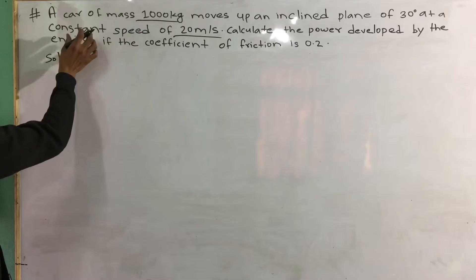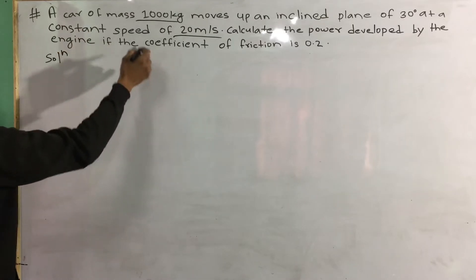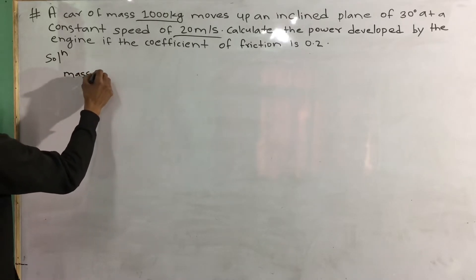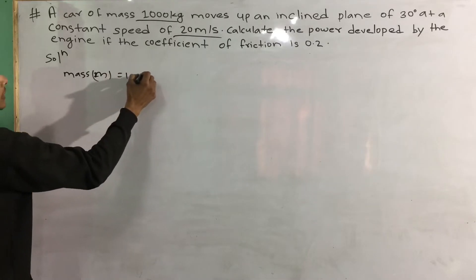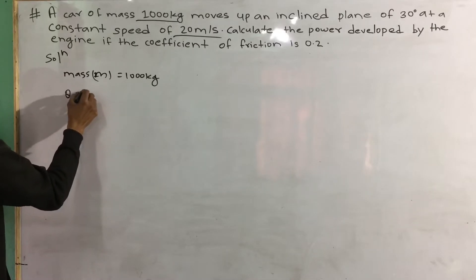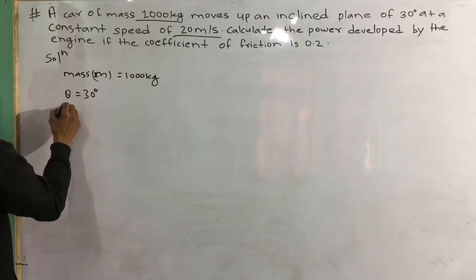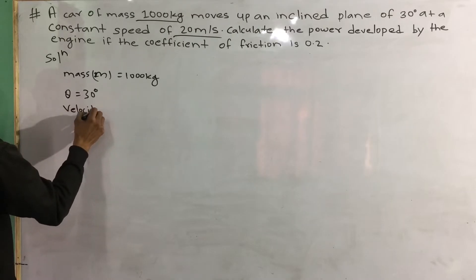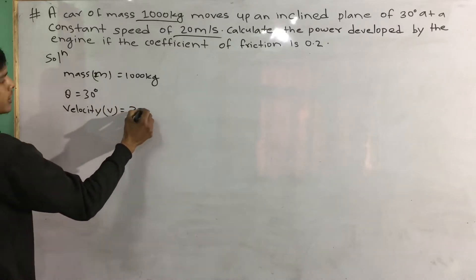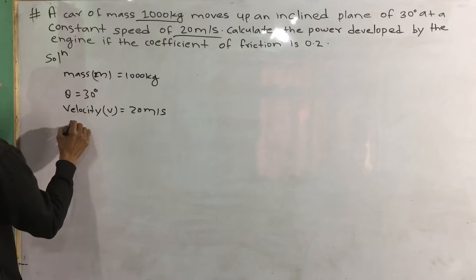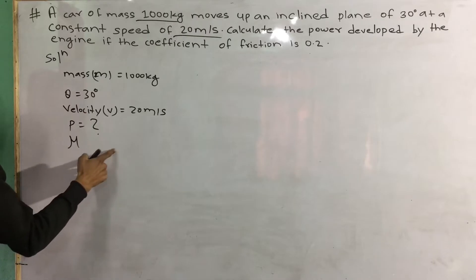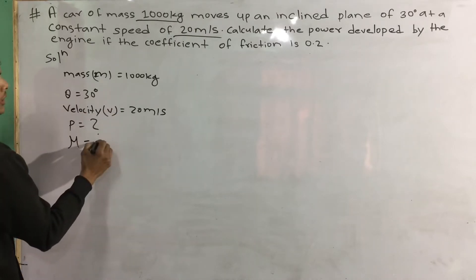Mass is equal to 1000 kg. The inclined plane angle is equal to 30 degrees. The constant speed is equal to 20 meters per second. The coefficient of friction is equal to 0.2.